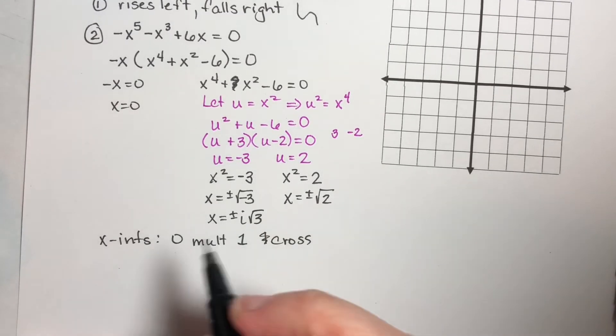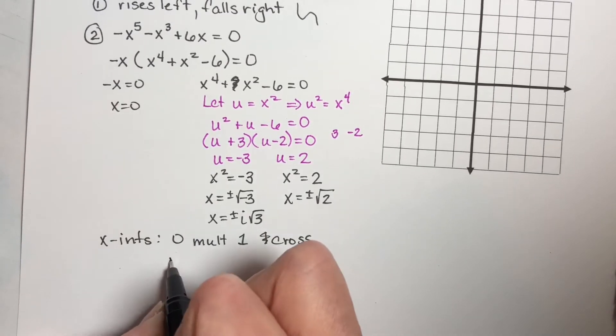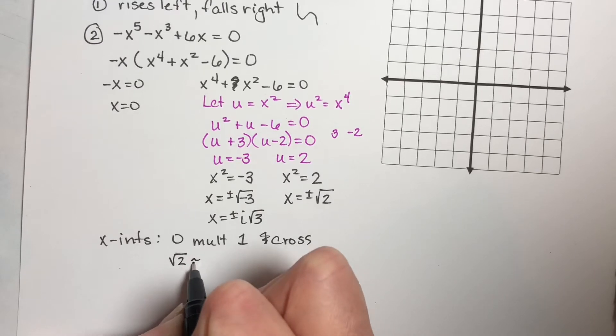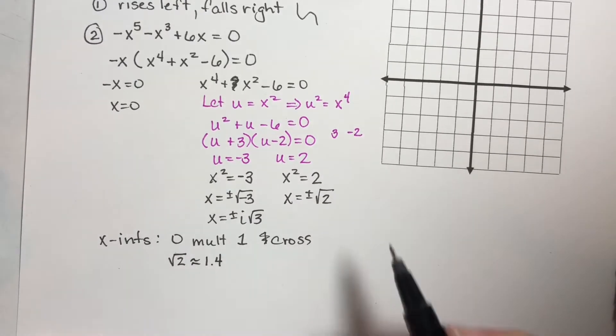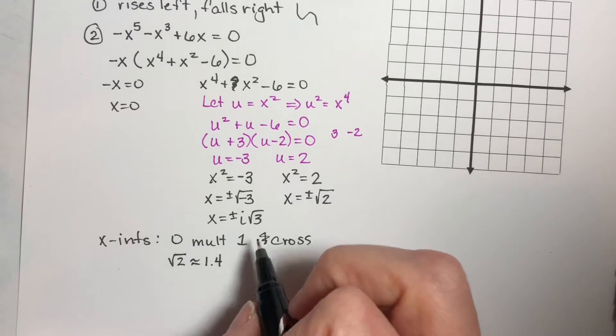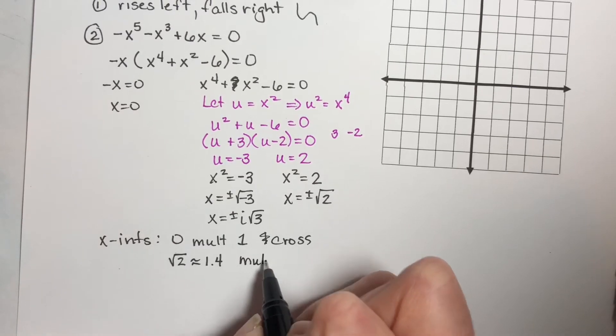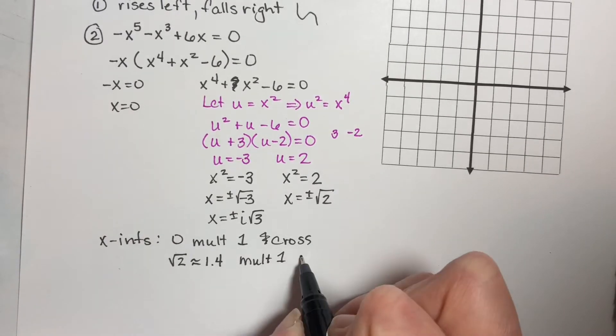I have an x-intercept of the square root of two, which is approximately 1.4. I got positive square root of two one time, so its multiplicity is one, and we also cross right here.